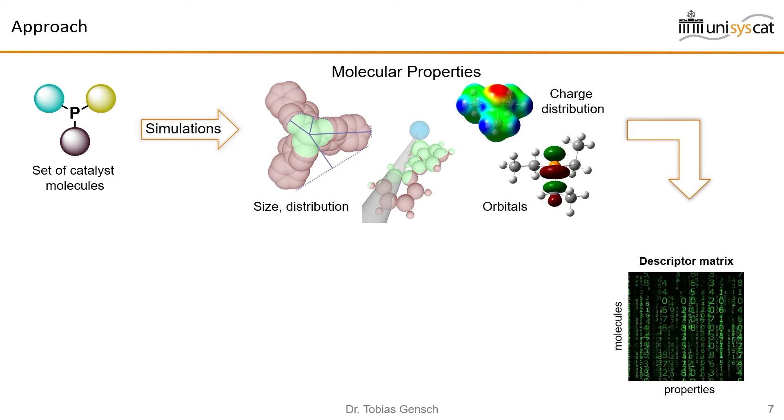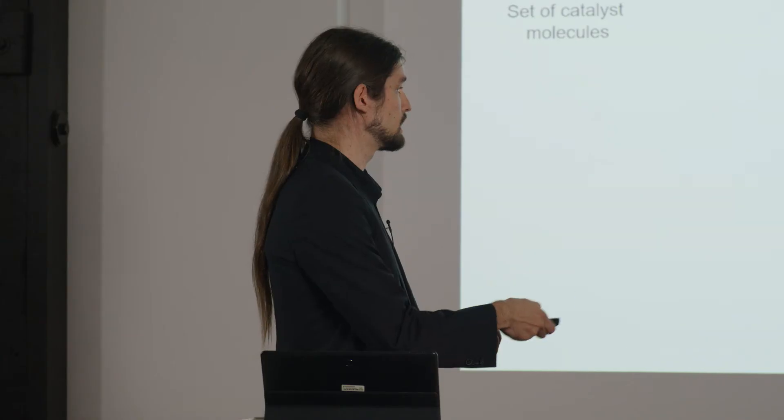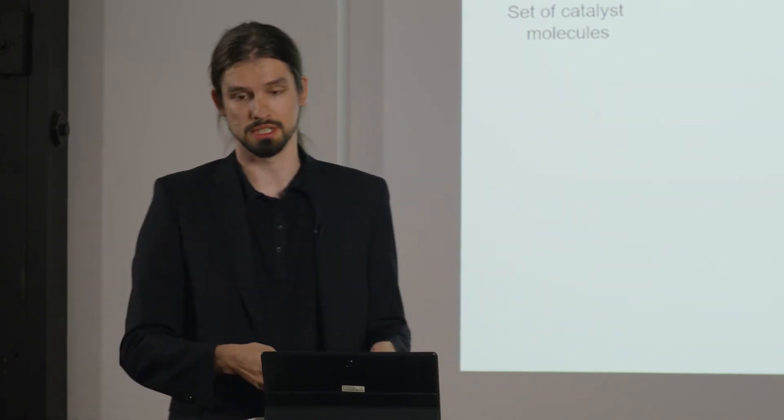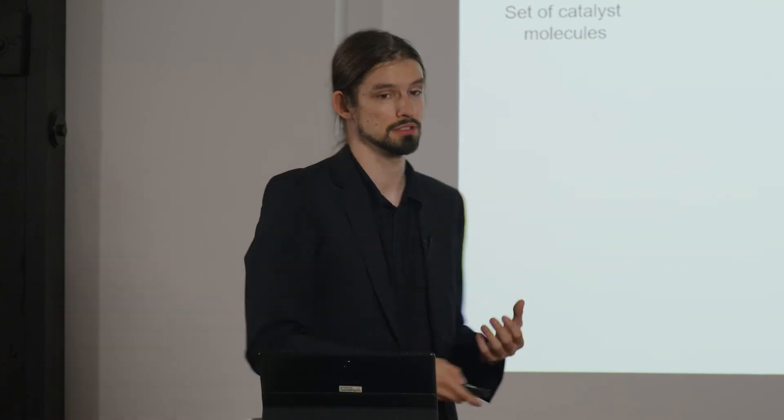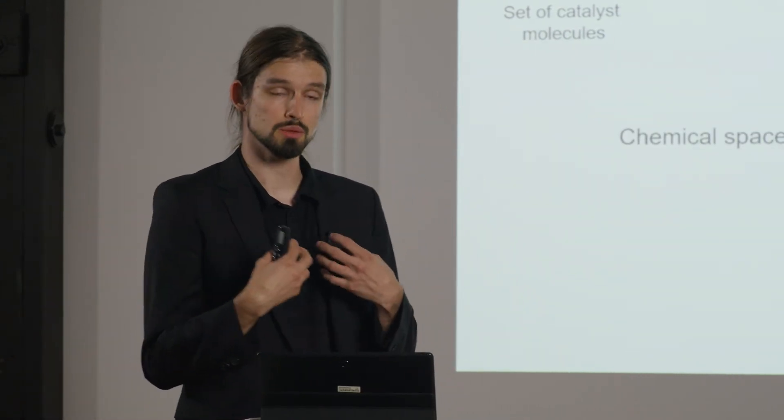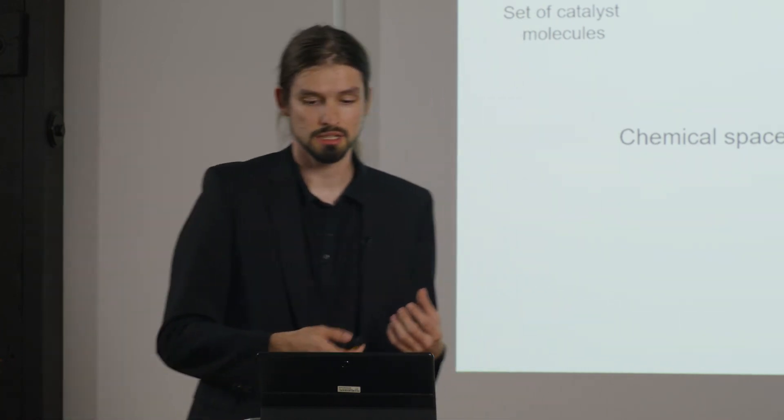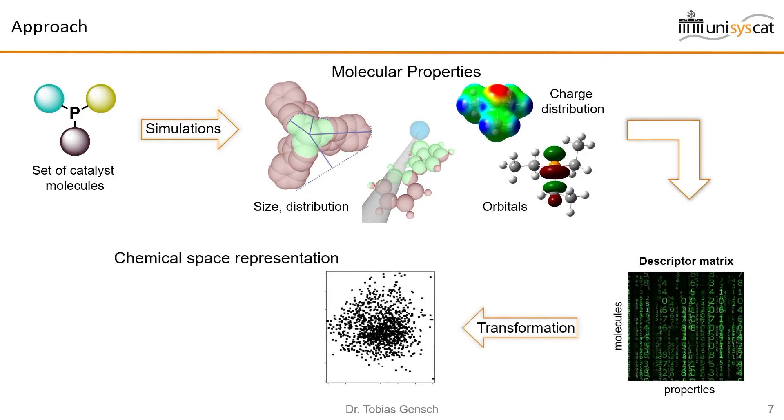This is useful for the statistical algorithms that we can use. We can easily think of 100 or so properties, so this is not an intuitive table to look at. This is where we come back to our chemical space idea because we can use unsupervised machine learning techniques to transform this highly dimensional descriptor matrix into a lower dimensional representation, for example a two-dimensional representation that we can plot and look at.